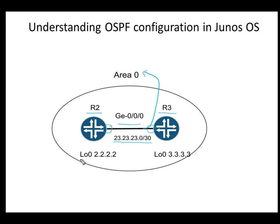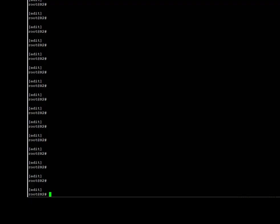Each router must have a router ID to identify the router from which the OSPF packet originates. In this topology, router IDs for R2 and R3 are assigned to loopback 0 interfaces — 2.2.2.2 and 3.3.3.3 respectively.